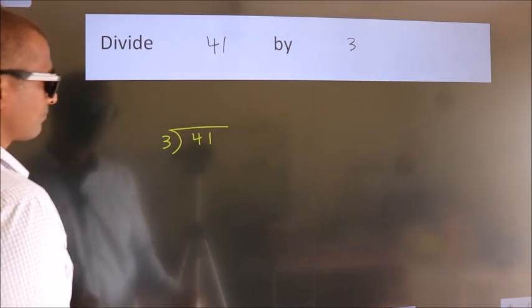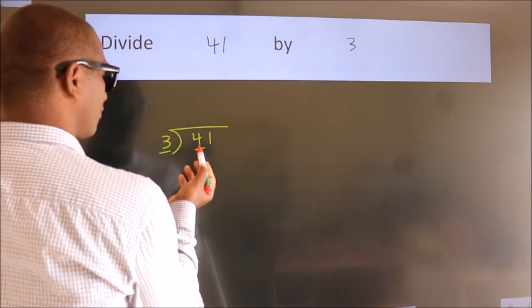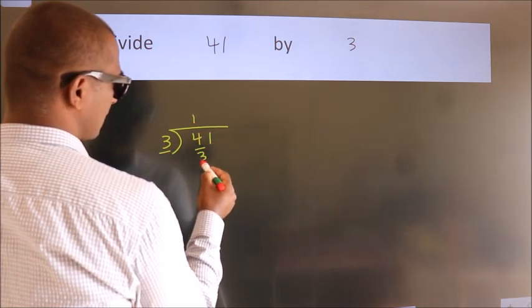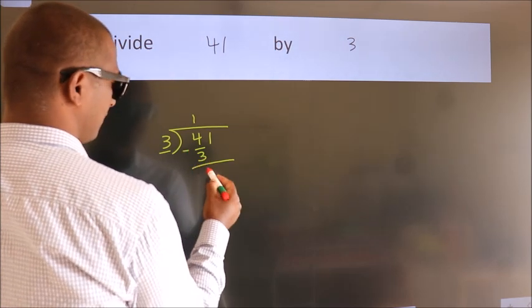Next, here we have 4, here 3. A number close to 4 in the 3 table is 3 times 1 is 3. Now we should subtract. We get 1.